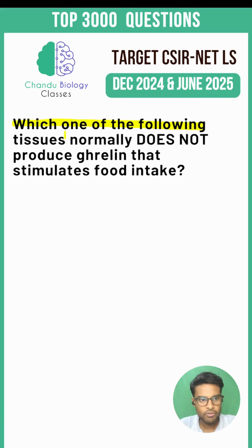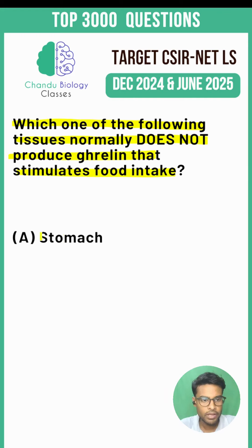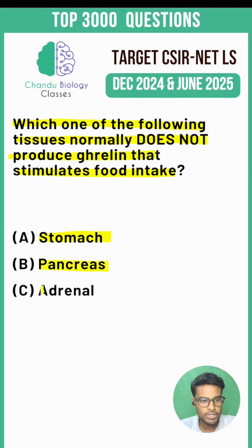Which one of the following tissues normally does not produce ghrelin, the hormone that stimulates food intake? Option A: stomach. Option B: pancreas. Option C: adrenal. Option D: liver.